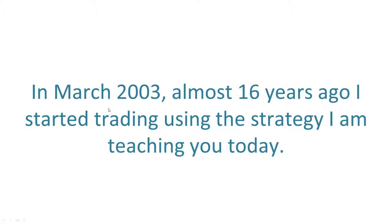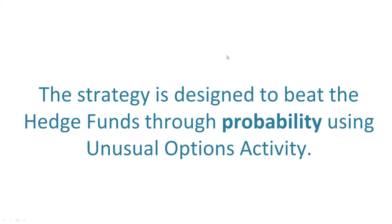In March 2003, almost 16 years ago, I started trading the strategy I'm going to teach you today. At the end of the presentation, I'm going to show you the scanner in real time and live. This strategy is designed to beat the hedge funds through probability using what we call unusual option activity — following institutional order flow in the option market. We're watching the biggest and best traders put on trades, and we try to mimic their positions. We can think of it as following the smart money, or piggybacking the biggest and best traders in the world.